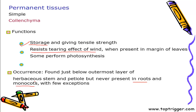As far as absence in monocots is concerned, in monocots the vascular bundles are scattered, so they need more protection. In place of colenchyma, they have sclerenchyma. That is why colenchymatous tissues are absolutely absent in roots and monocots.